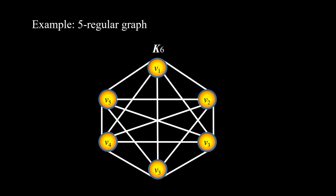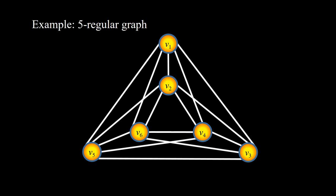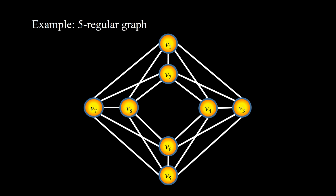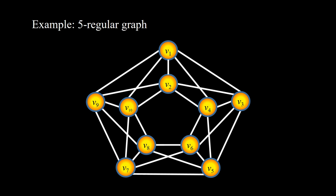The complete graph K6 is an example of a five-regular graph. Other examples of five-regular graphs can be obtained from four-regular graphs by inserting additional edges — for example, inserting these edges into the previous four-regular graph, and similarly for other such graphs.